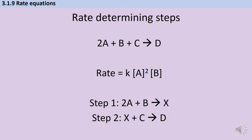Here's an example of what an exam question might ask you. We've got a simple equation for a hypothetical chemical reaction and a rate equation that goes with it, and below this they've given us the two steps in the process. Even though the overall equation involves A, B, and C reacting together to make D, we can see that A and B react first to make an intermediate, and then that intermediate reacts with C to produce the final product D.